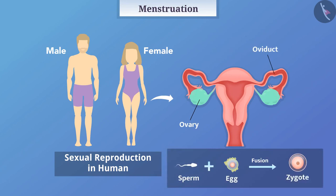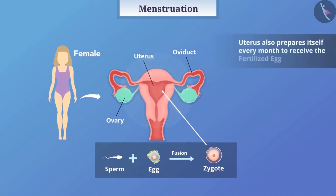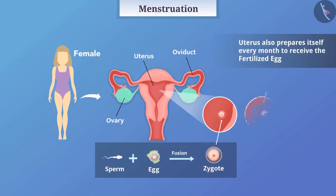The zygote gets implanted on the wall of the uterus. Therefore, the uterus also prepares itself every month to receive the fertilized egg. Its lining becomes fleshy and spongy so that the fetus receives nourishment.